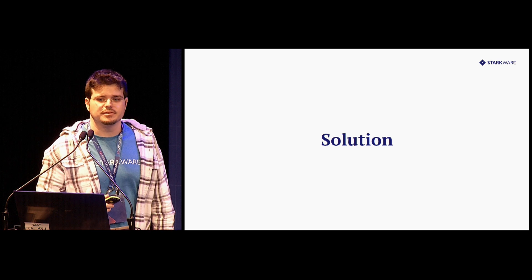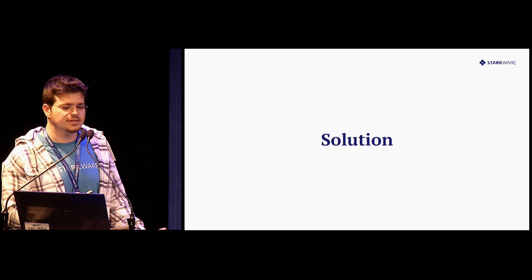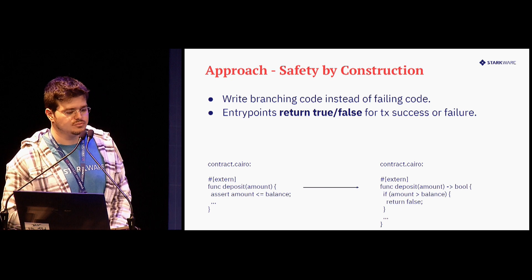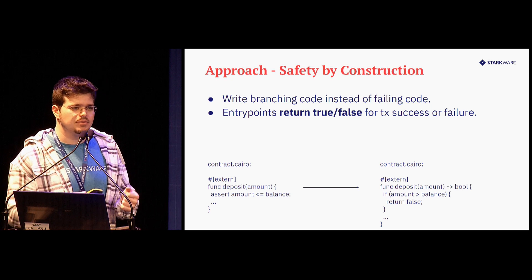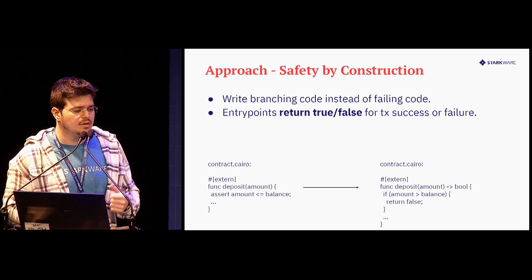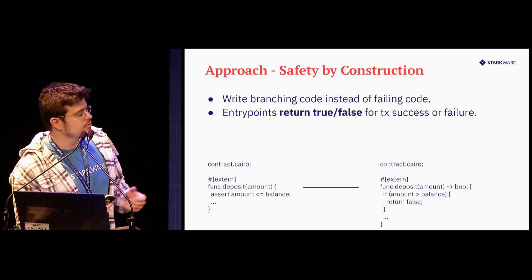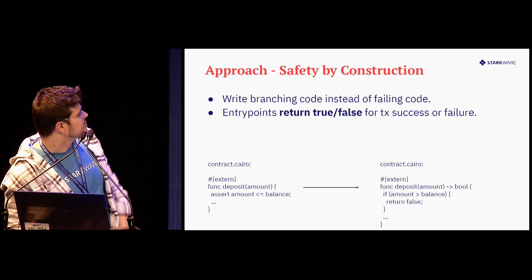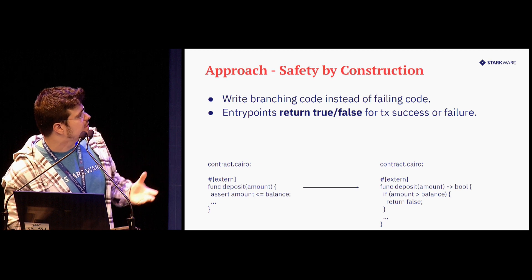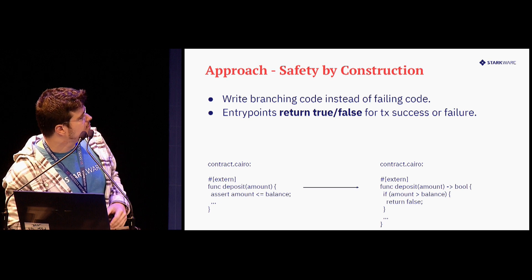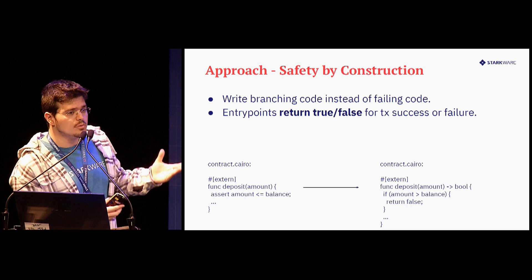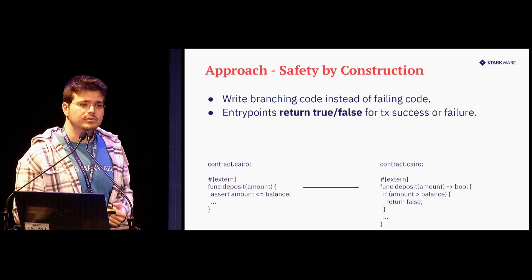Alright, so what is the solution suggested here? Let's call it Sierra. The approach is safety by construction. We want the user to write branching code instead of failing code. For example, instead of writing assert amount is less than balance, we do an if instead: if amount is more than balance, return false.